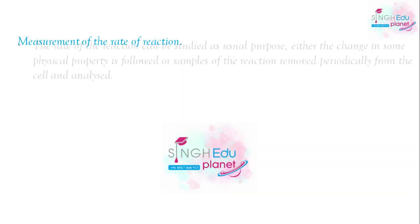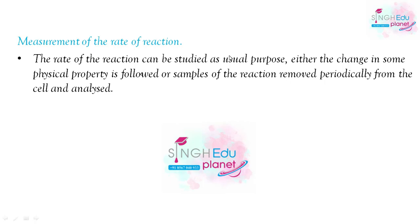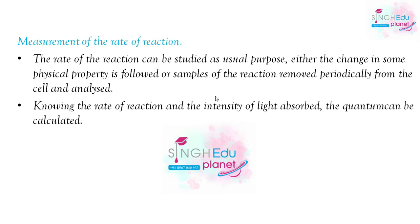The rate of reaction is measured by periodically removing samples and measuring changes in physical properties. Once we have the rate of reaction and the intensity of light absorbed, we can calculate the quantum yield. That was all about our video — please subscribe to the channel and share with everyone. Thank you.